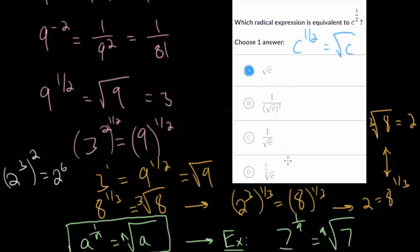And we could look at the other ones just to clarify and make sure. For instance, this one is 1 over the square root of c squared. And remember that square roots and squares are inverse operations. They cancel each other out. And so this would just be 1 over c, or c to the minus 1 power, since we're dividing by c one time.